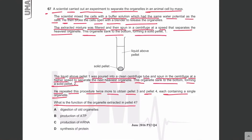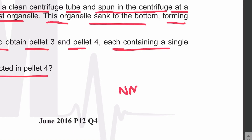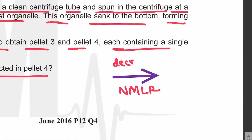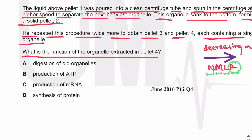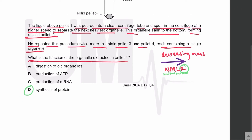For animal cells, use the mnemonic N-M-L-R to remember organelles in decreasing mass: Nucleus, Mitochondria, Lysosomes, Ribosomes. So pellet 4 contains ribosomes, whose function is protein synthesis. The answer is D. For a plant cell, the mnemonic would be N-C-M-L-R, where C stands for chloroplasts, which are absent in animal cells.